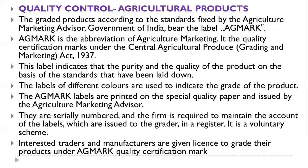AGMARK labels are issued by the Agriculture Marketing Advisor — underline this important point. The labels are serially numbered and the firm is required to maintain an account of the labels issued to the grader in a register. It is a voluntary scheme; interested traders and manufacturers are given a license to grade their products under the AGMARK quality certification mark.